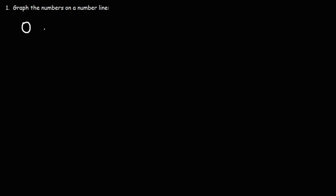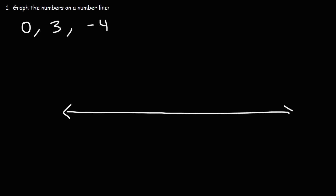So let's plot 0, positive 3, and negative 4. Zero is right in the middle of the number line, so let's start with that. Positive integers are on the right side of the number line, and negative integers are on the left side. So to plot positive 3, we just need to count 3 units to the right.